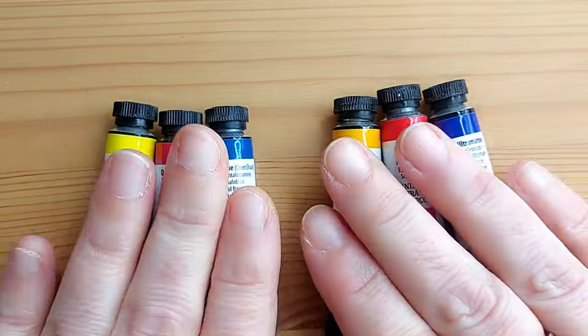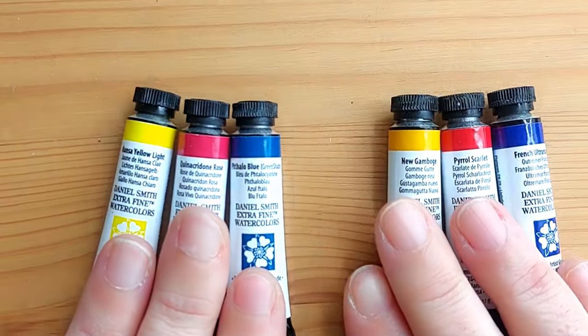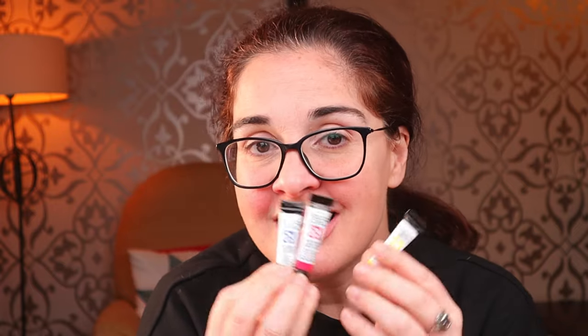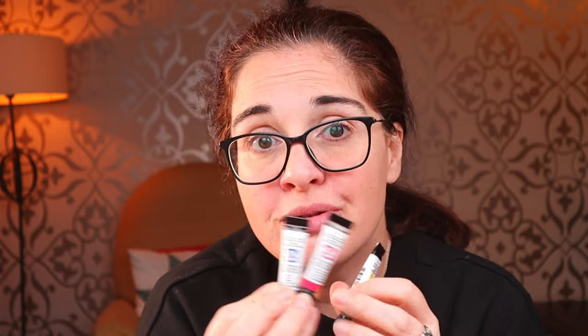Okay, so here are our six colors. The warm ones are New Gamboge, Pyro Scarlet, and French Ultramarine. And the cool ones are Hansa Yellow Light, Quinacridone Rose, and Phthalo Blue with a green shade. That's what the GS stands for.